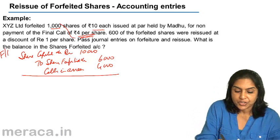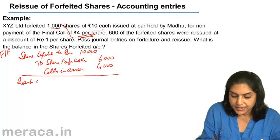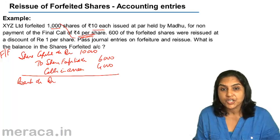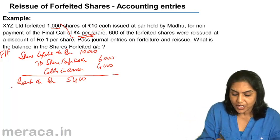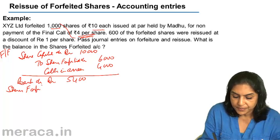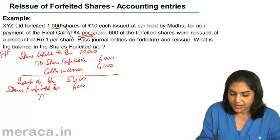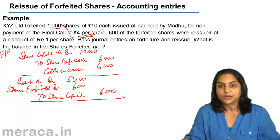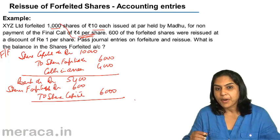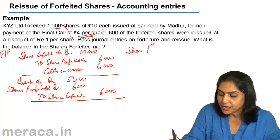Then these shares were reissued at a discount of ₹1 per share. The entry is: Bank account debit — 600 shares reissued at ₹9, therefore ₹5,400; Shares Forfeited account debit — the discount is ₹1 into 600 shares = ₹600; to Share Capital — 600 shares into ₹10 each = ₹6,000. We do not say Discount account; instead we say Shares Forfeited account debit.